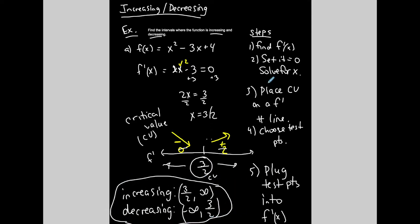To recap: first, find the first derivative. Second, set the first derivative equal to zero and solve for x — these are your critical values. Place them on an f prime number line, choose test points on top of the number line. Plug the test points into the first derivative: if it's positive, you're increasing; if it's negative, you're decreasing.